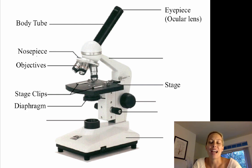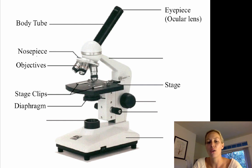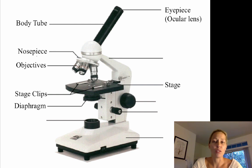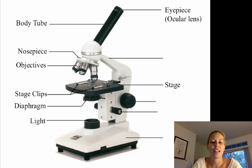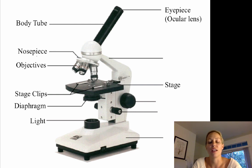Below the stage is the diaphragm, which is responsible for regulating the amount of light that hits the specimen. There is a hole in the stage so that light can reach and illuminate the specimen. Below is the light, which projects light up through the diaphragm, through the stage, into the objective lens, and on into the eyepiece so you can see what you're looking at.